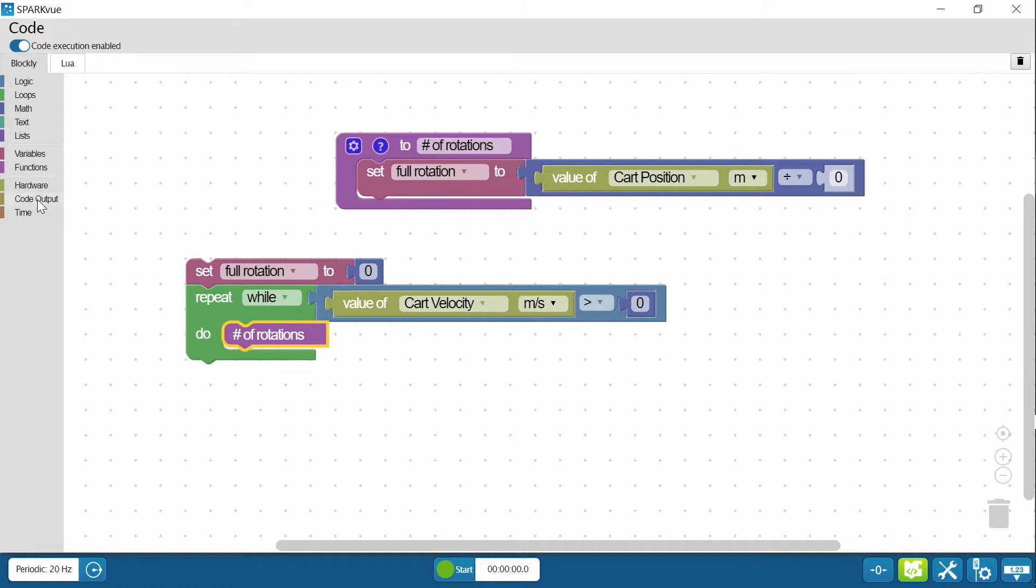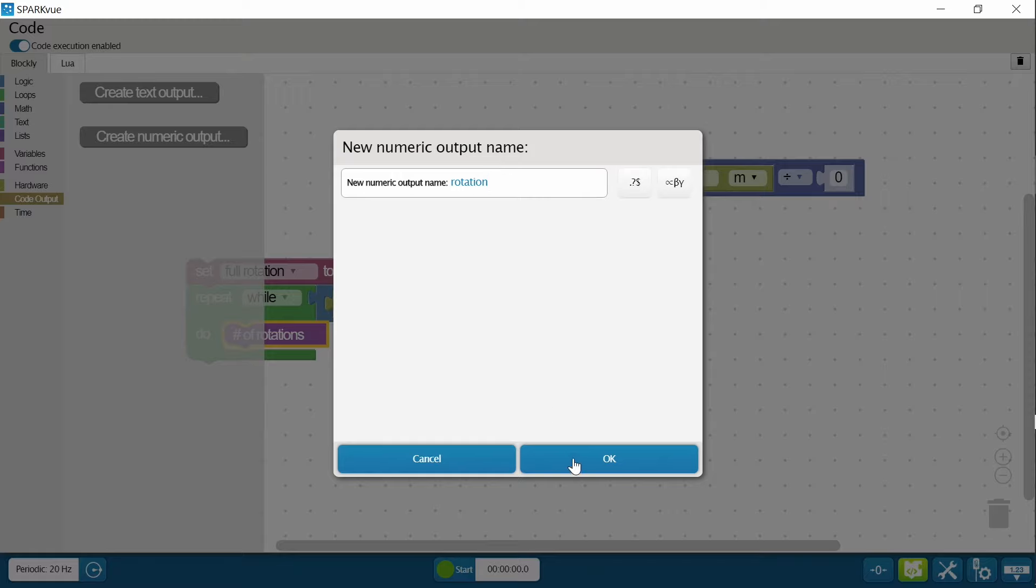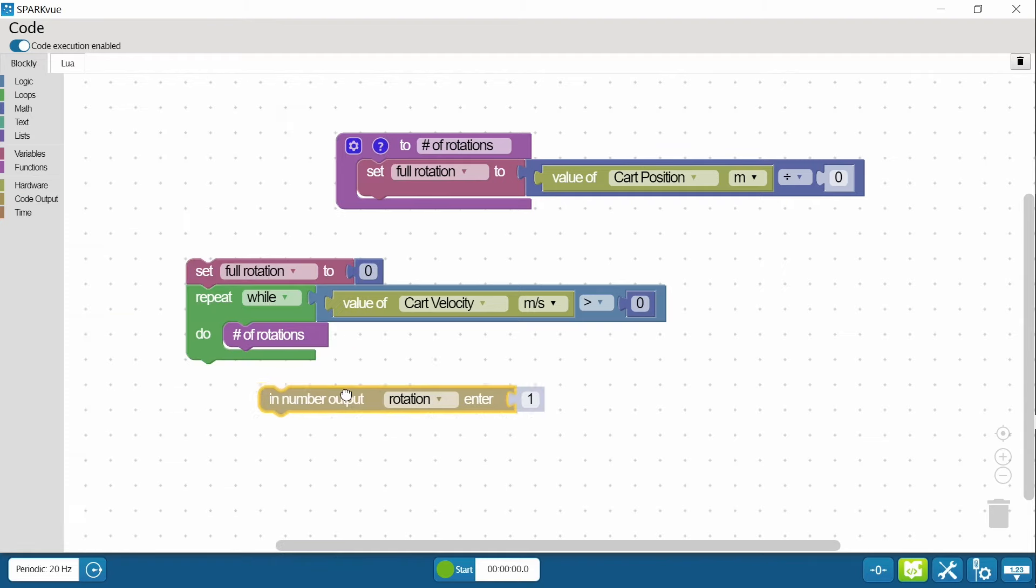And here's a piece you may not have done yet. We're going to create a numerical output, something that we're going to see on the screen. So I need to choose code output, create numeric output. I'm going to name that rotation so it's easy to refer to. And pull that in underneath. And this is where we're going to recall that variable again, a full rotation.